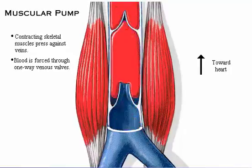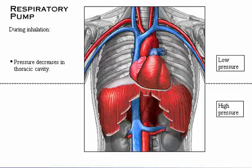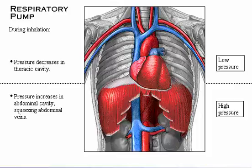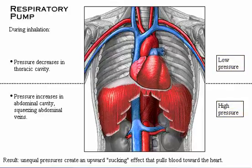Pressure changes occurring in the ventral body cavity during breathing create the respiratory pump that sucks blood upward toward the heart. As we inhale, pressure in the thoracic cavity decreases. Meanwhile, pressure increases in the abdominal cavity, squeezing abdominal veins. These unequal pressures create an upward sucking effect that pulls blood toward the heart.